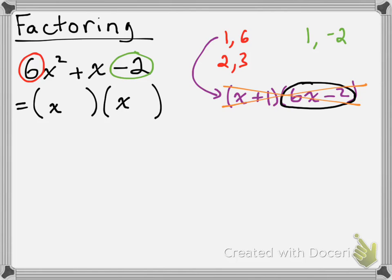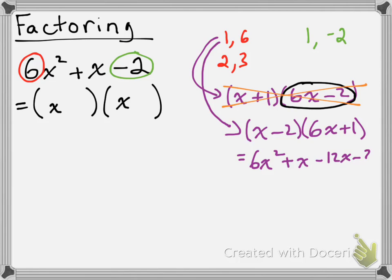So what about if we switch the positive 1 and the negative 2? Let's try that. That's going to give us x minus 2 and 6x plus 1. There's no common factors here, so let's give it a go and see what happens. I'm going to expand it out: 6x squared plus x minus 12x minus 2, which gives me 6x squared minus 11x minus 2.